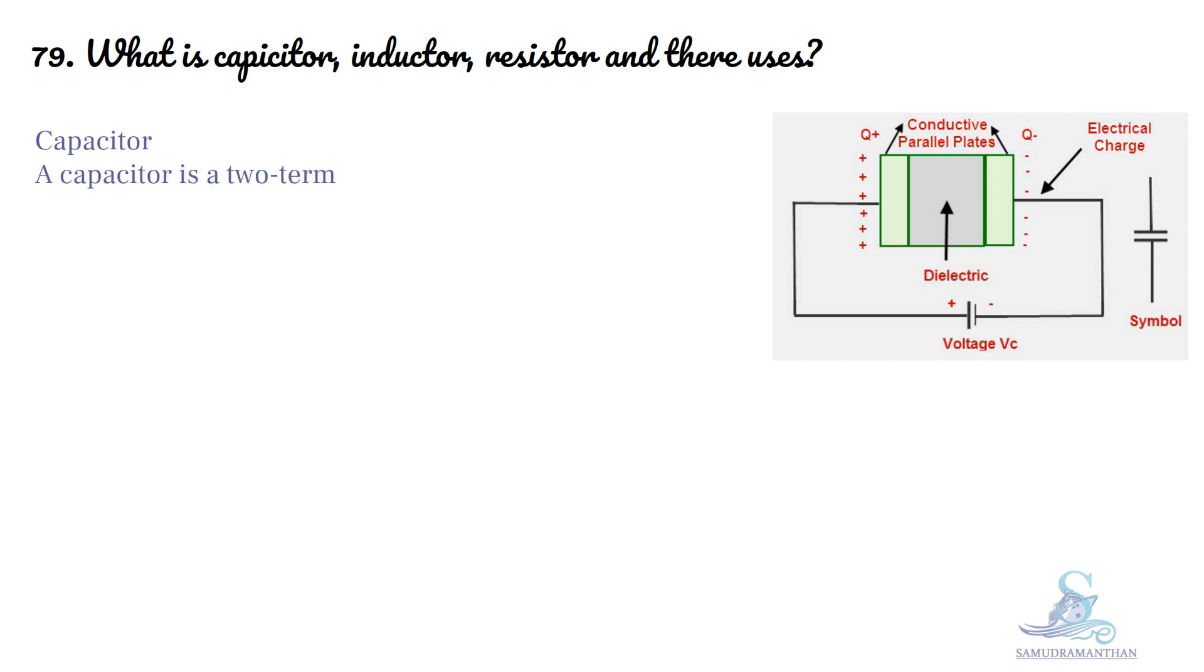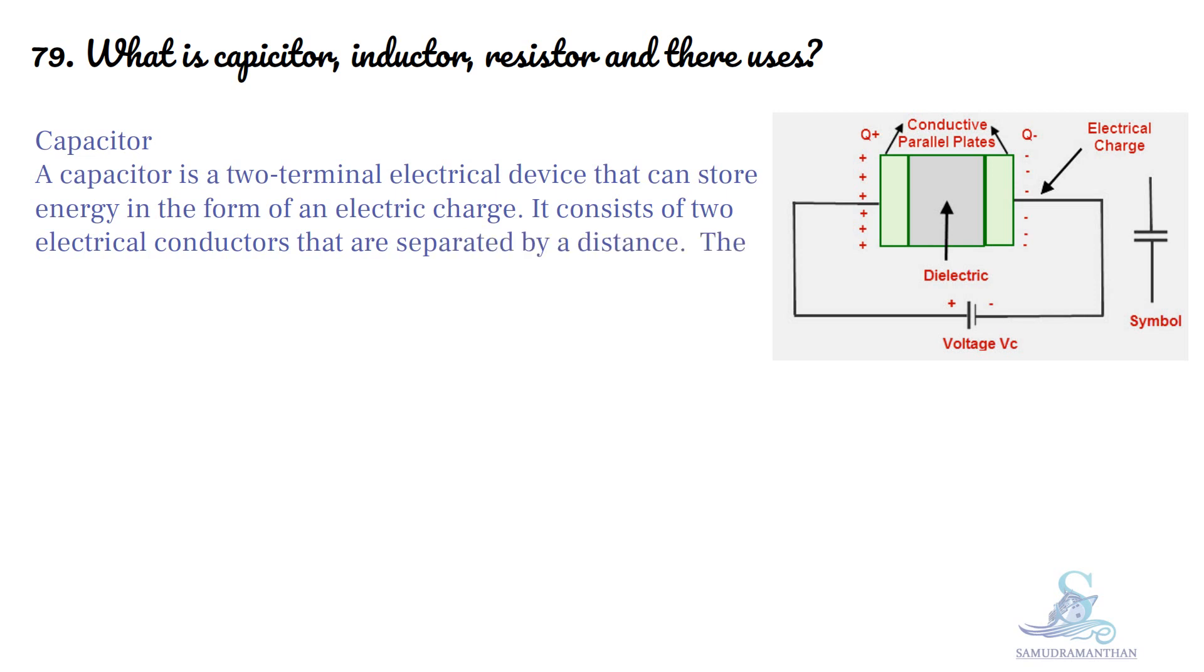Capacitor: A capacitor is a two-terminal electrical device that can store energy in the form of an electric charge. It consists of two electrical conductors that are separated by a distance. The space between the conductors may be filled by vacuum or with an insulating material known as a dielectric.